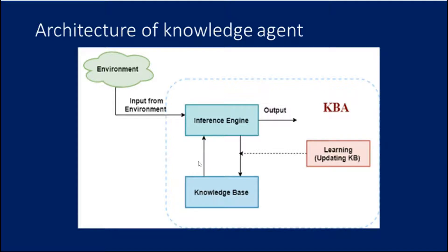The knowledge base is required for updating knowledge, for an agent to learn with experience, and to take action as per the knowledge. The inference system derives new sentences from old ones — that is what the inference system does; it generates new facts so that an agent can update the KB. The inference system works with two rules: forward chaining and backward chaining. The operations performed by a knowledge-based agent are tell, ask, and perform — these three are very important.